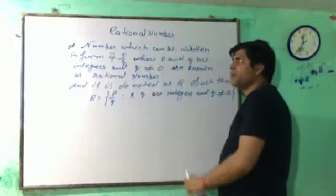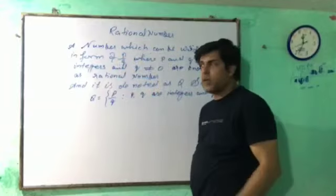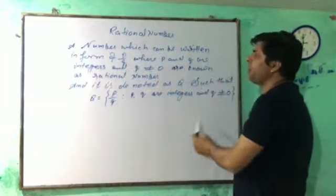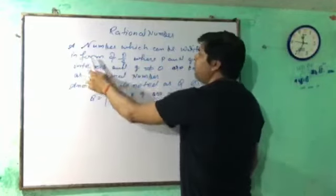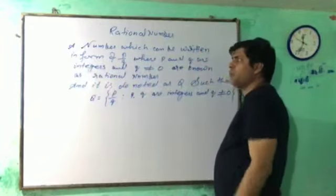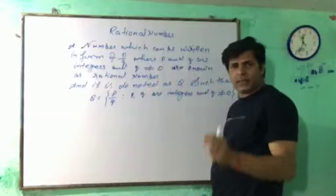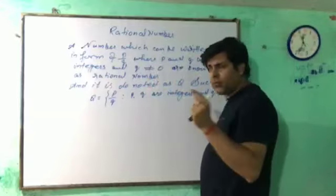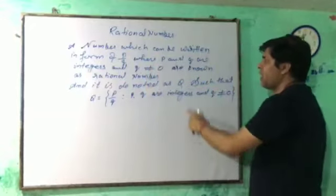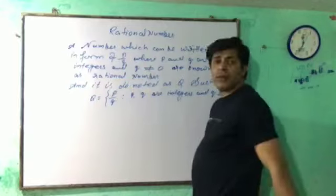First of all we will discuss about the rational number. A number which can be written in form of P upon Q, where P and Q are integers and Q is not equal to 0, is known as a rational number.